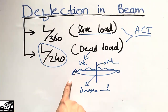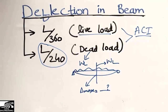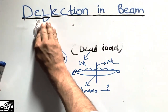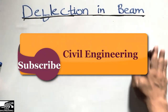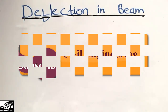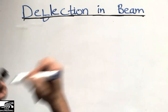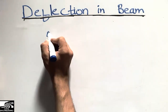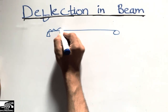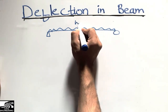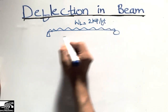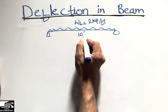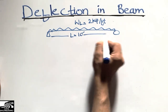I will explain these two limits by taking one example. Consider a simply supported beam with a uniformly distributed live load of 2 kip per foot acting on it, and the total length of the beam is 10 feet.